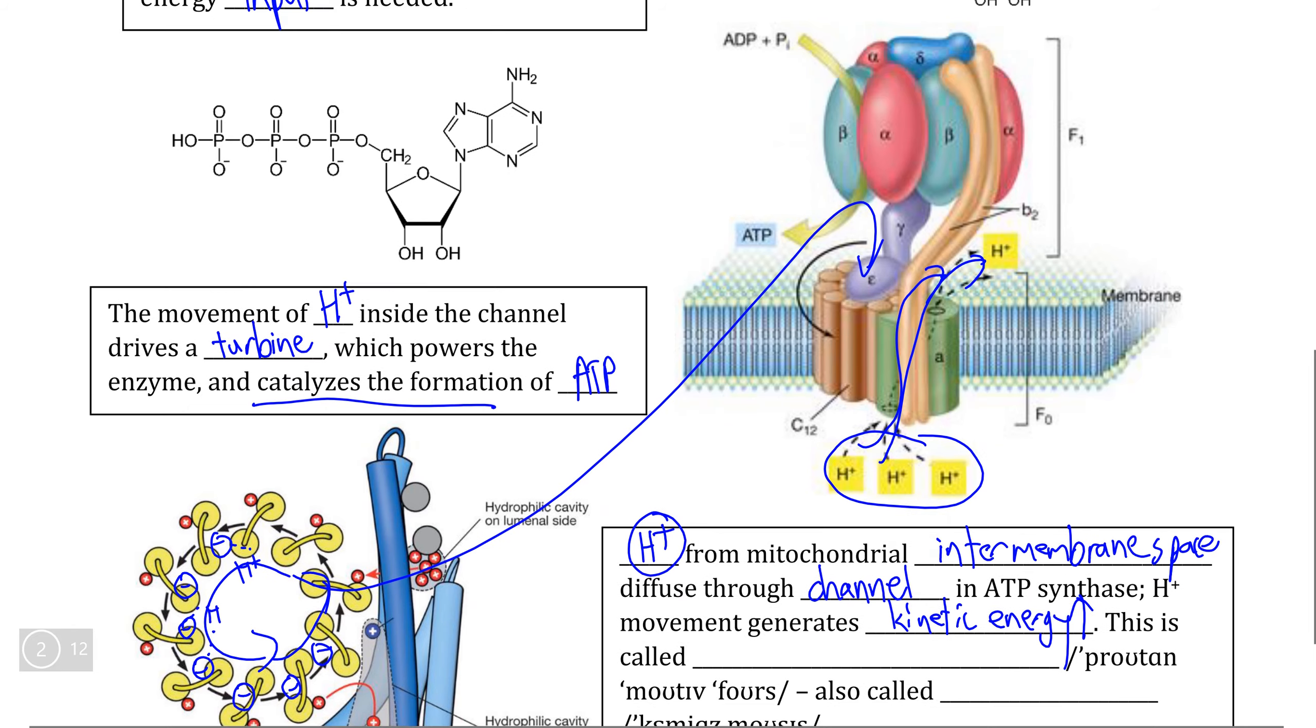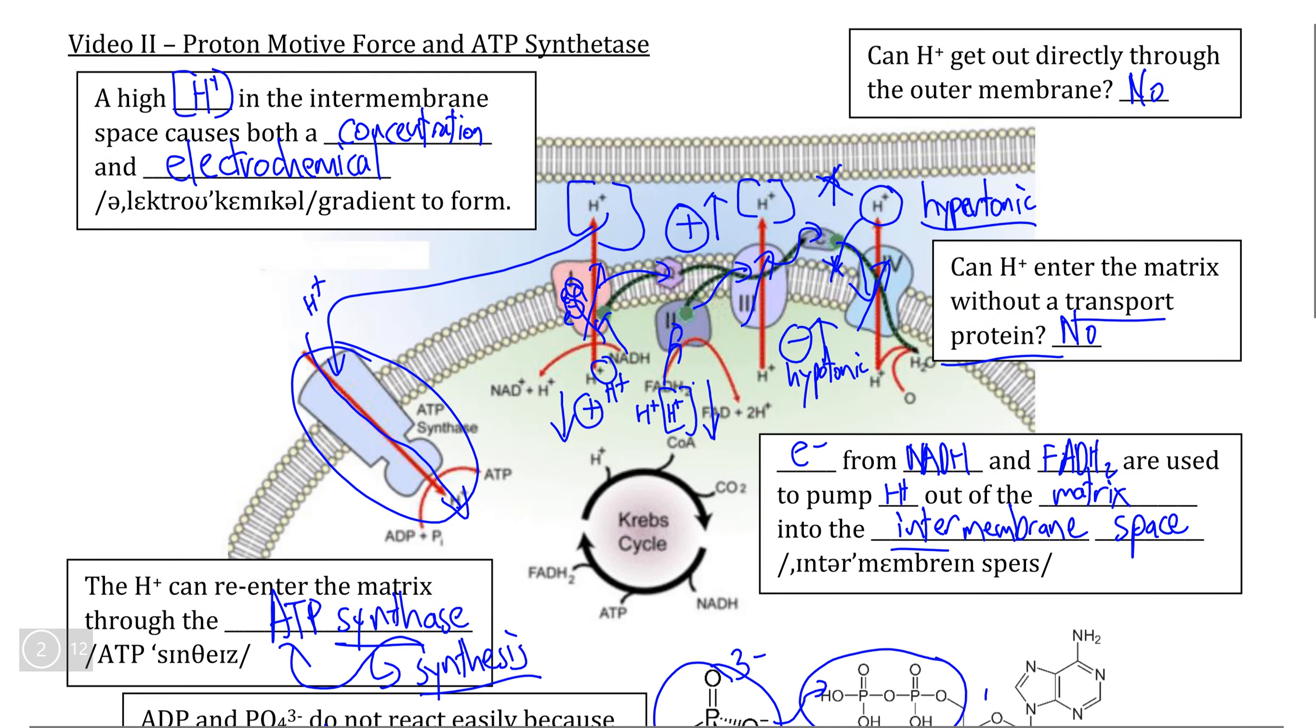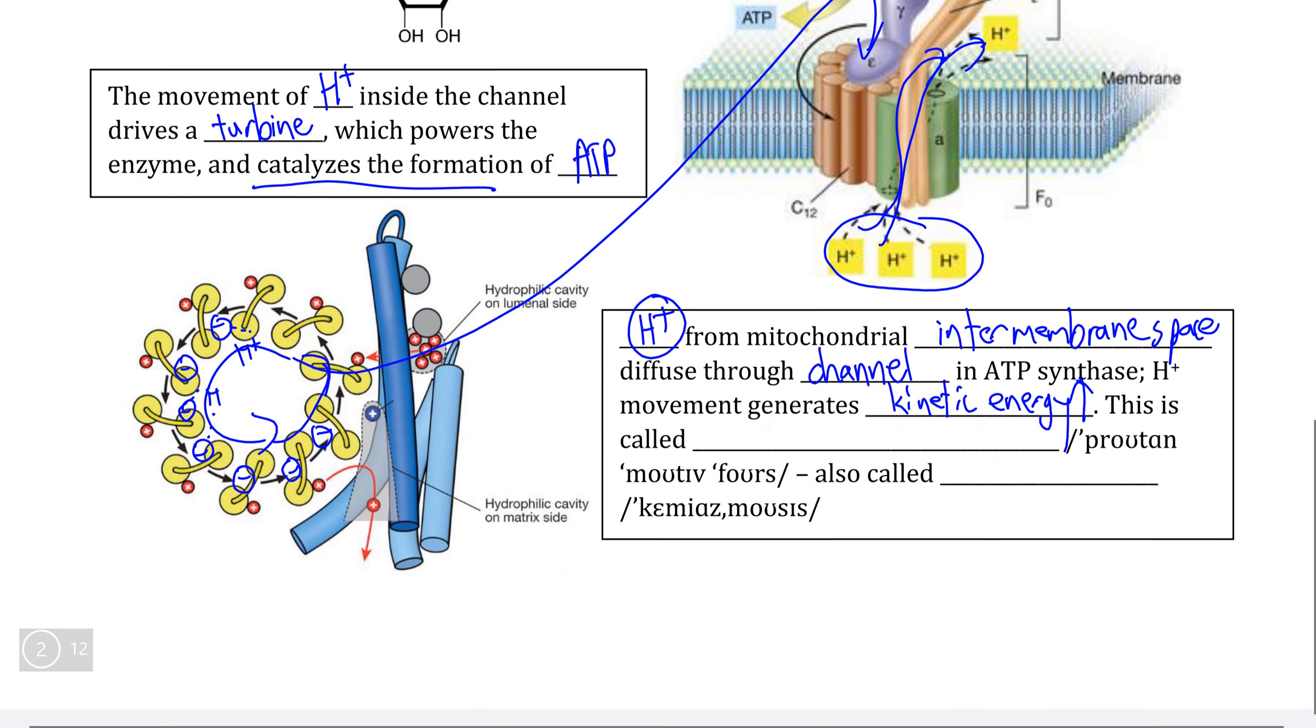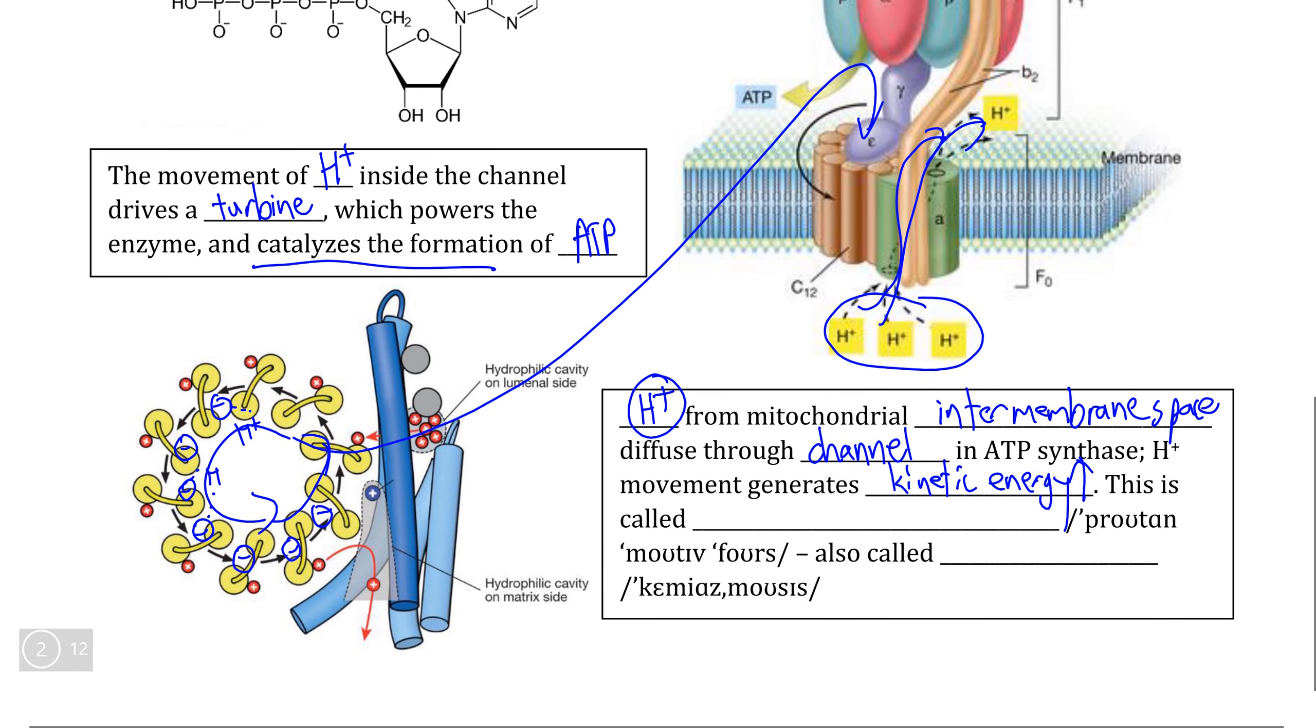We know that this kinetic energy is going to be very strong because not only does this H plus naturally bump into each other and push each other into an area of low concentration, but all of the charge repulsion and attraction toward the negative area inside the matrix is going to drive H plus in naturally with lots of kinetic energy.